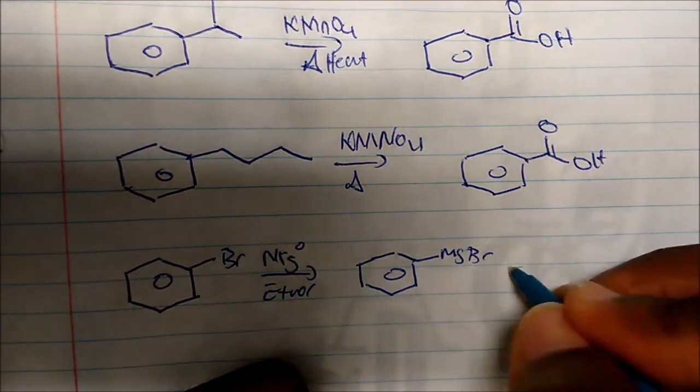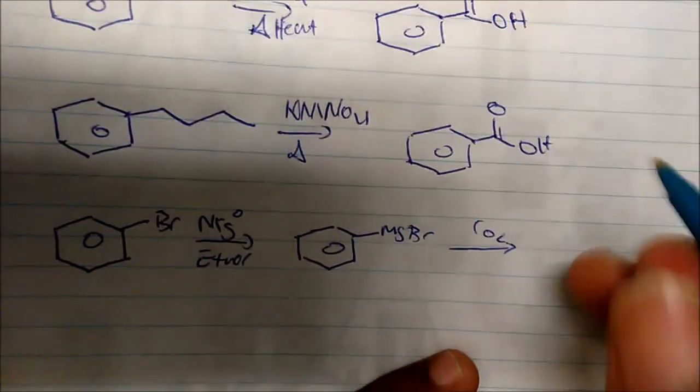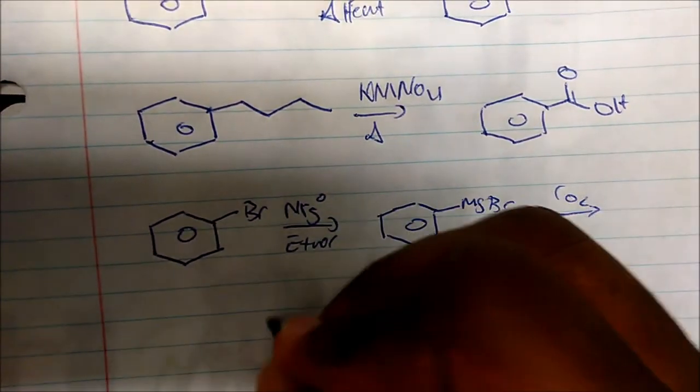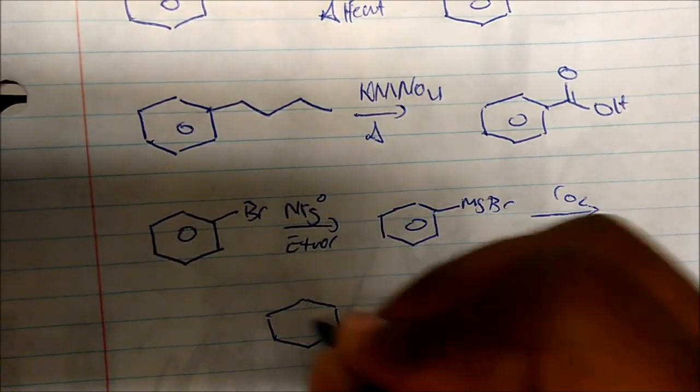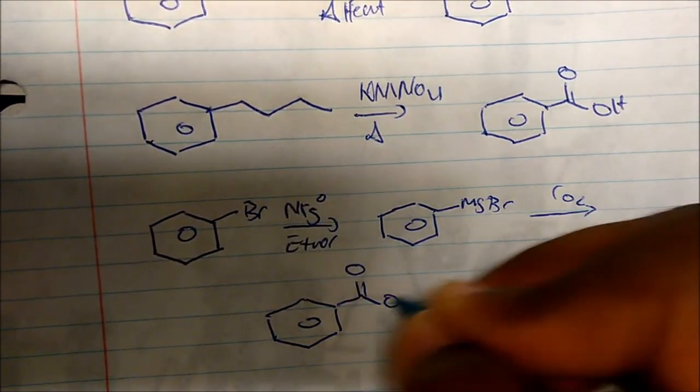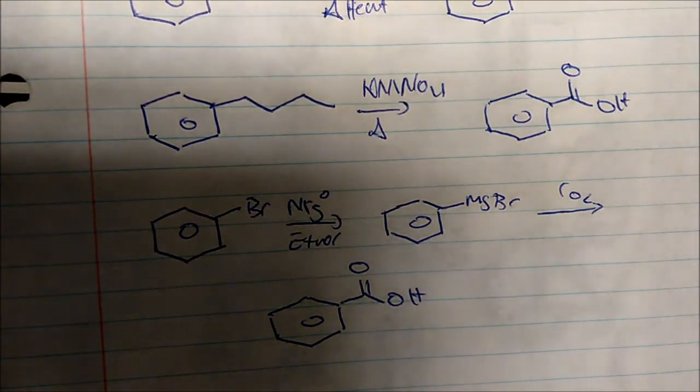And once we create a Grignard reagent we add CO2, and actually from CO2 we get the carboxylic acid.